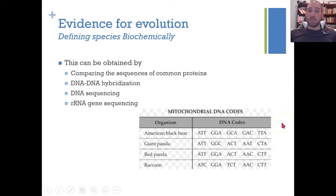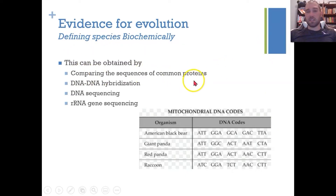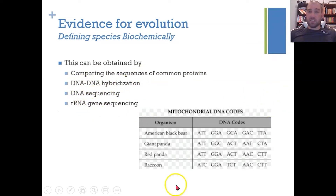So let's talk about some evidence for evolution. We can define species biochemically by comparing the sequences of amino acids and proteins, DNA-DNA hybridization, DNA sequencing, and ribosomal RNA sequencing.